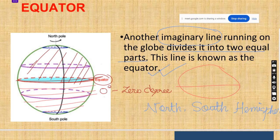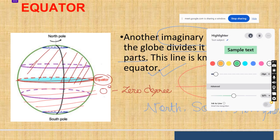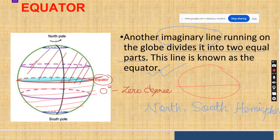So these all lines which are drawn on the earth surface, these all are the imaginary lines because with our naked eyes we can't see these kinds of lines. So the first part we have done from the chapter which is very important.